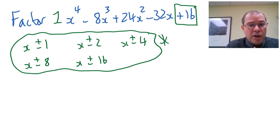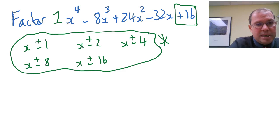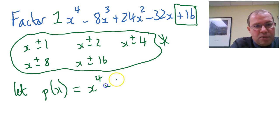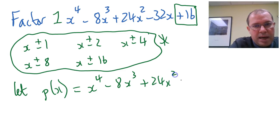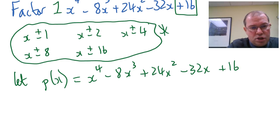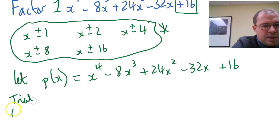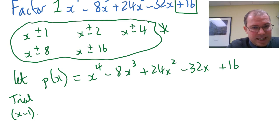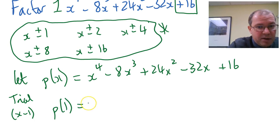So we've thought about our possible factors for this degree 4 polynomial, and now we have to try some using the factor theorem. The first thing I like to do is give the polynomial a name. I call it p of x, because p stands for polynomial — you could also use q of x or f of x. So p of x is x to the 4 minus 8x cubed plus 24x squared minus 32x plus 16. I'm going to put a number in to try it out. Let's try to see if x minus 1 is a factor. If you remember from the factor theorem, you let x minus 1 equal 0, giving x equals 1, and put 1 into the polynomial. So if p of 1 is 0, then x minus 1 is a factor.